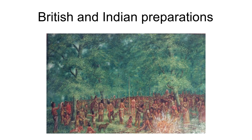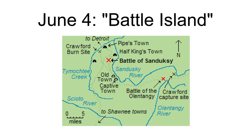The size of the combined Delaware, Wyandotte, and Mingo force has been estimated at anywhere from 200 to 500. British reinforcements were nearby, but Shawnees from the south were not expected to arrive until the next day. When the American scouts appeared, Pipe's Delawares pursued them while the Wyandotts temporarily held back. The first skirmishing of the Crawford expedition began at about 2 p.m. on June 4th, 1782.